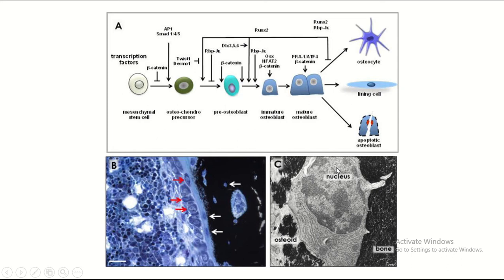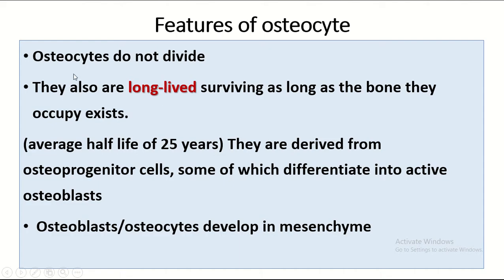This is the electron microscopic picture of the osteocyte, showing the nucleus, organelles, rough endoplasmic reticulum, and lysosomes. Key features of the osteocyte: they do not divide, they are long-lived cells with a half-life of about 25 years, and both osteoblasts and osteocytes develop from mesenchyme.